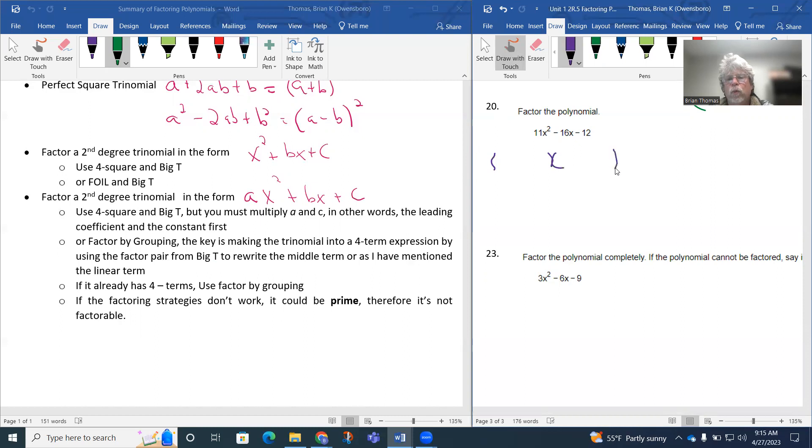Notice how again, 11x squared is really one possibility because 11 is prime - 11x times x or x times 11x. Now the catch is this negative 12. There are 1 and 12 and 2 and 6 and 3 and 4, and also there's a lot of possibilities now for the negative 12. But the catch is I have to add up to this negative 16.